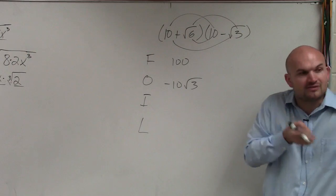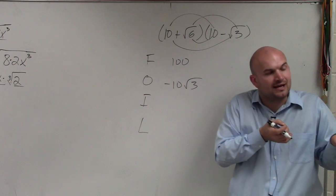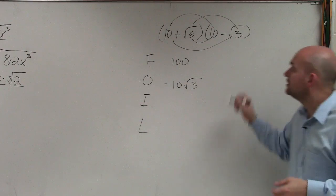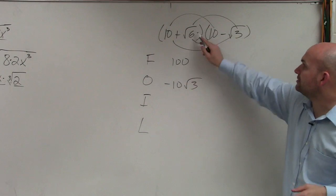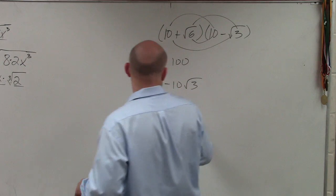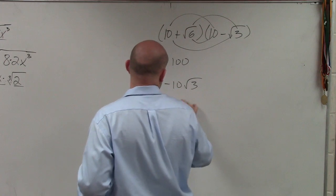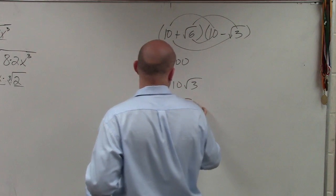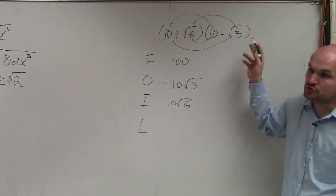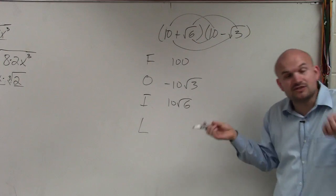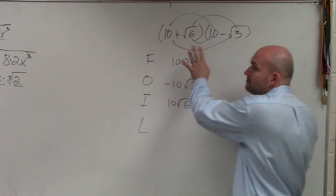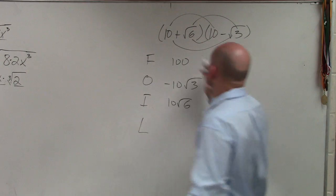You can't multiply a number outside of a radical with a number inside. Inner: square root of 6 times 10, that equals 10 square root of 6. And then the last one: square root of 6 times square root of 3 — as long as they have the same index, you can multiply two numbers inside the radical.